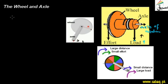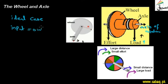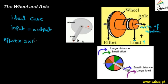Now, if we look at the wheel and axle case, we neglect the friction forces. If we have the input work done on the machine, the input will be equal to the output. In this case, the input is the effort multiplied by the distance traveled by that force. That means how much distance is traveled by this force gives us 2π into capital R.